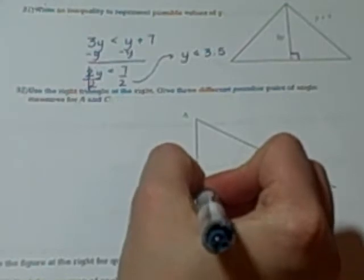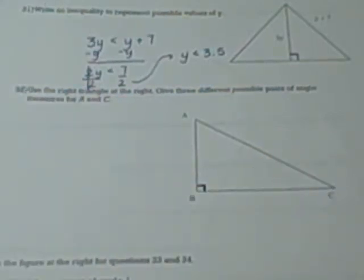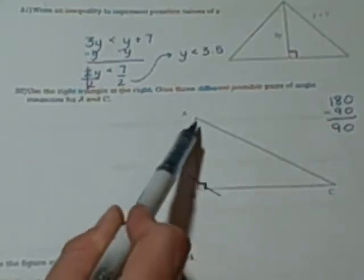Problem number 32 asks you to use the right triangle at the right and give three different possible pairs of angle measures for A and C. This one down here, angle B, is a 90 degree angle. I want you to think about what you know about the angles in a triangle. The angles in a triangle always have to add up to 180. I'm taking out 90 of it, that leaves me with 90. So that means that whatever angle measures these are, A and C, they have to total up to 90 degrees.